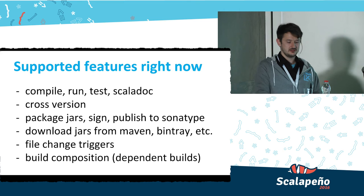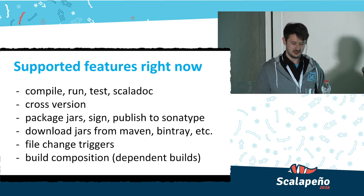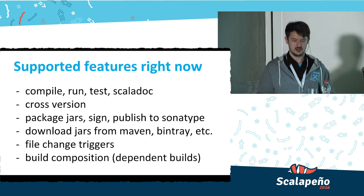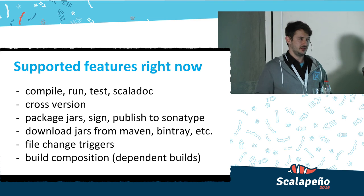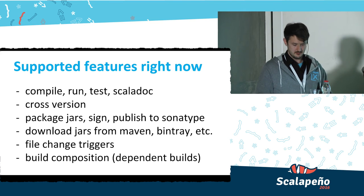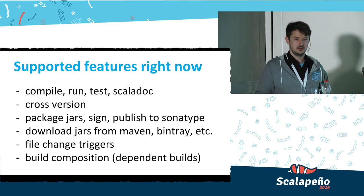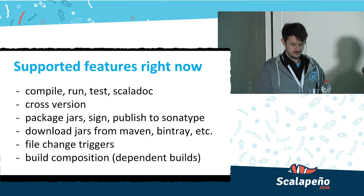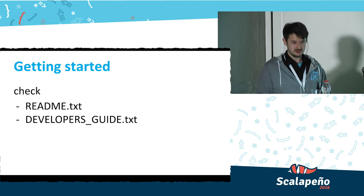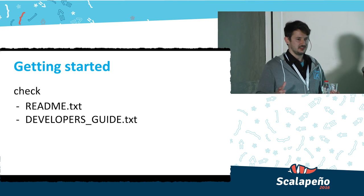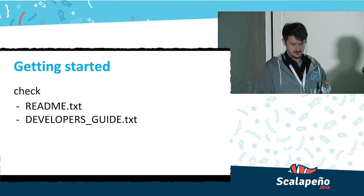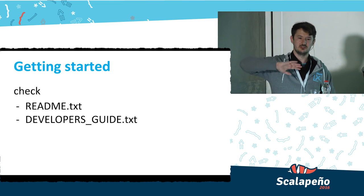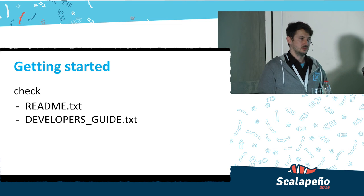Supported features right now: compile, run, test, generate ScalaDocs, cross-versioning, packaging JARs, signing them, publishing to Sonatype — currently hard-coded to Sonatype but easy to extend to Bintray. You can download JARs from Maven or other repositories, add different URLs, use file change triggers, and build composition. There's a README that would get you started with the idea and how to create a build file, plus a developer's guide covering folder roles, debugging tips, and more.